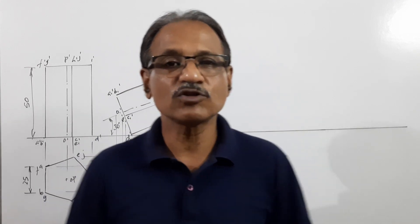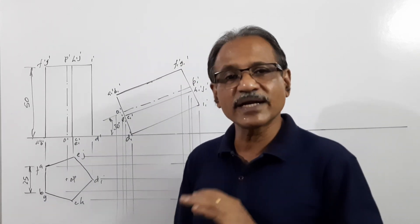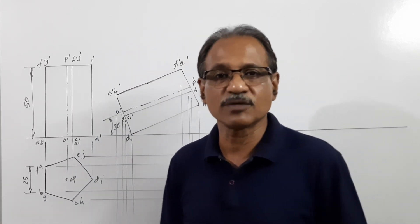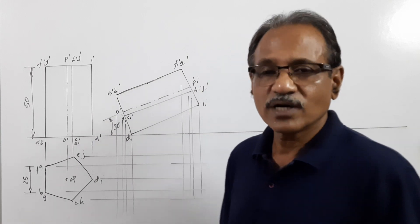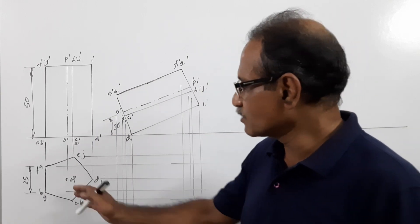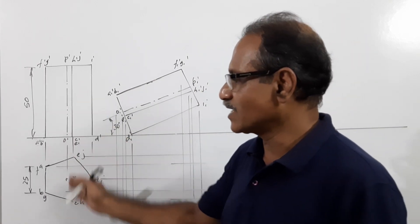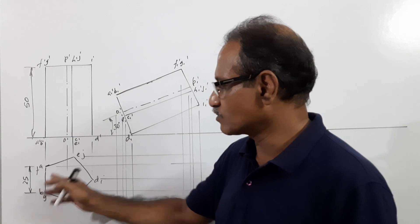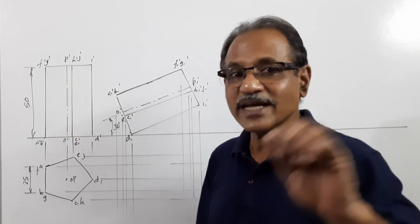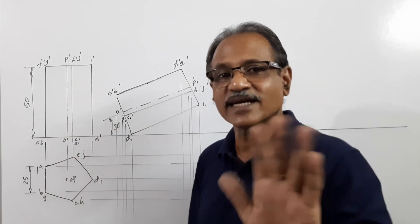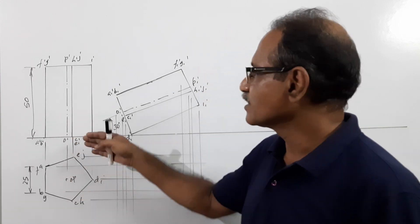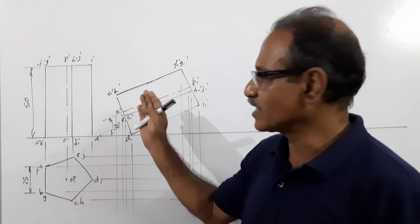I am going to draw it by the redrawing method as well as the auxiliary projection method. First, I draw the simple position plan and elevation — 25 mm side plan and elevation. The 15 mm condition is not taken here; it is not required at this stage. Then I have redrawn that elevation.